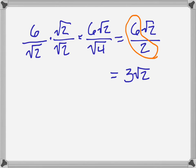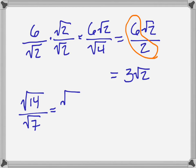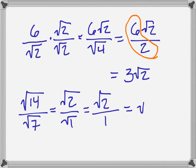If you had something like square root of 14 divided by square root of 7, you're allowed to reduce numbers inside of square roots. I can divide both by 7 and get square root of 2 over square root of 1. I can't do anything with square root of 2, but the square root of 1 is just 1. So my final answer would be square root of 2.